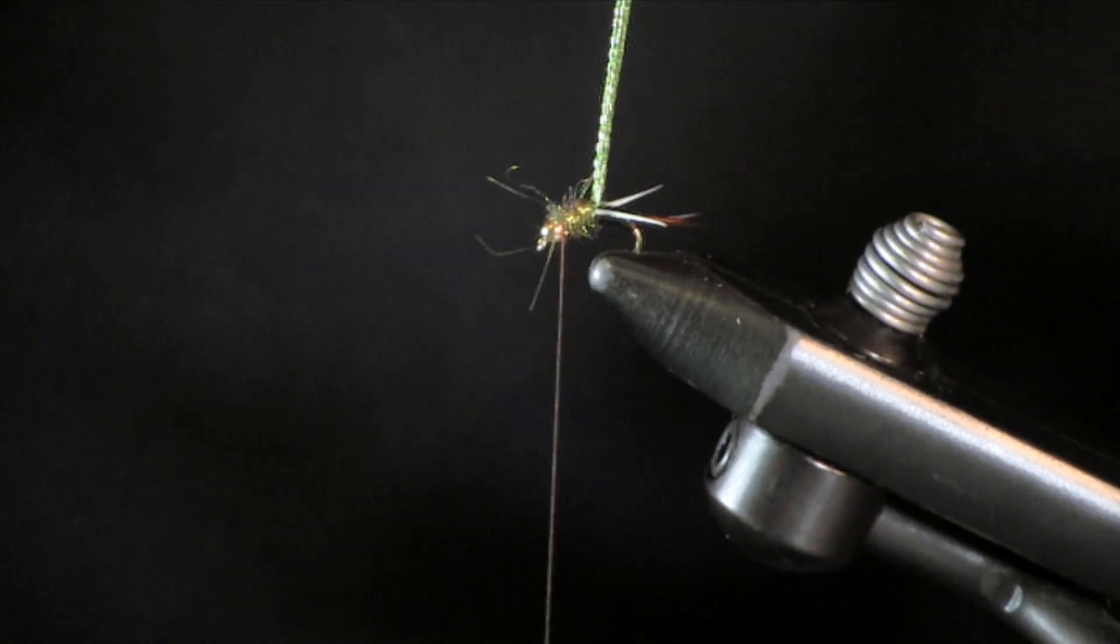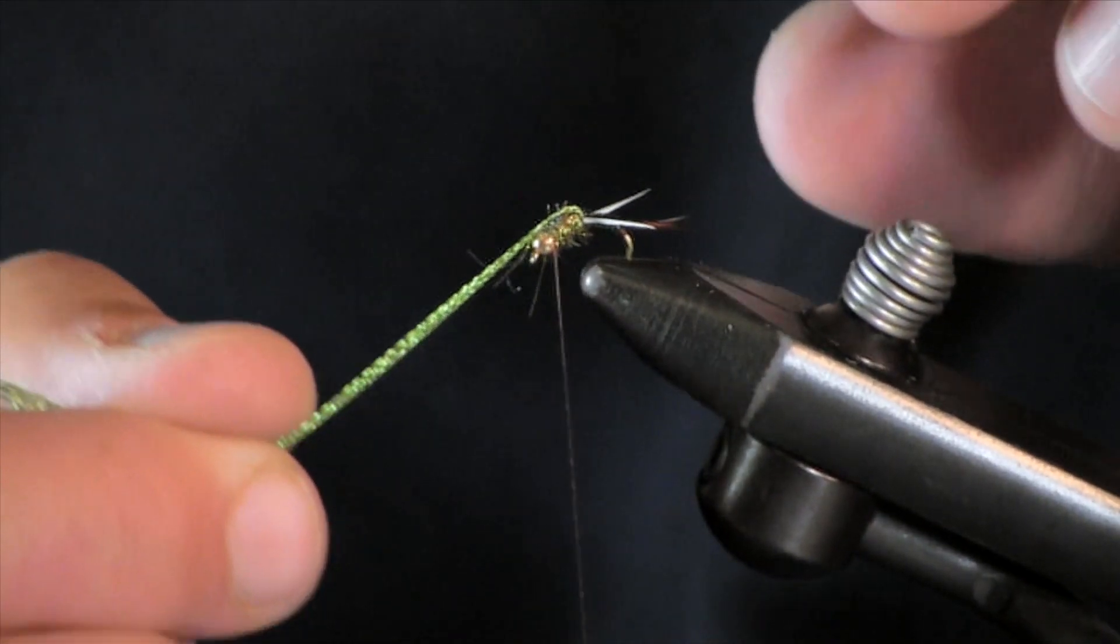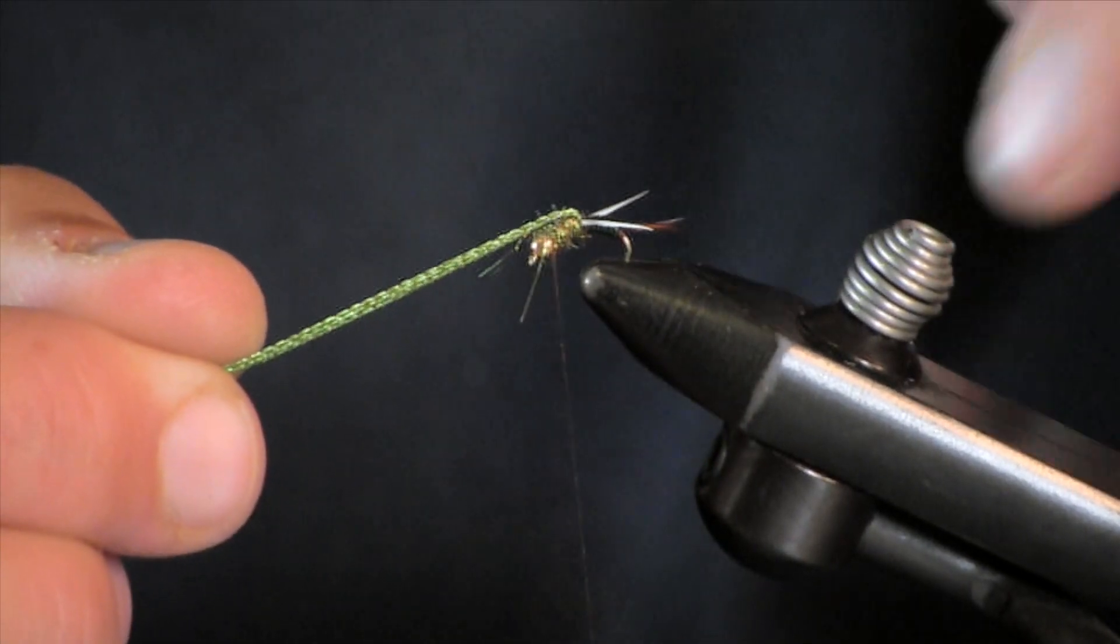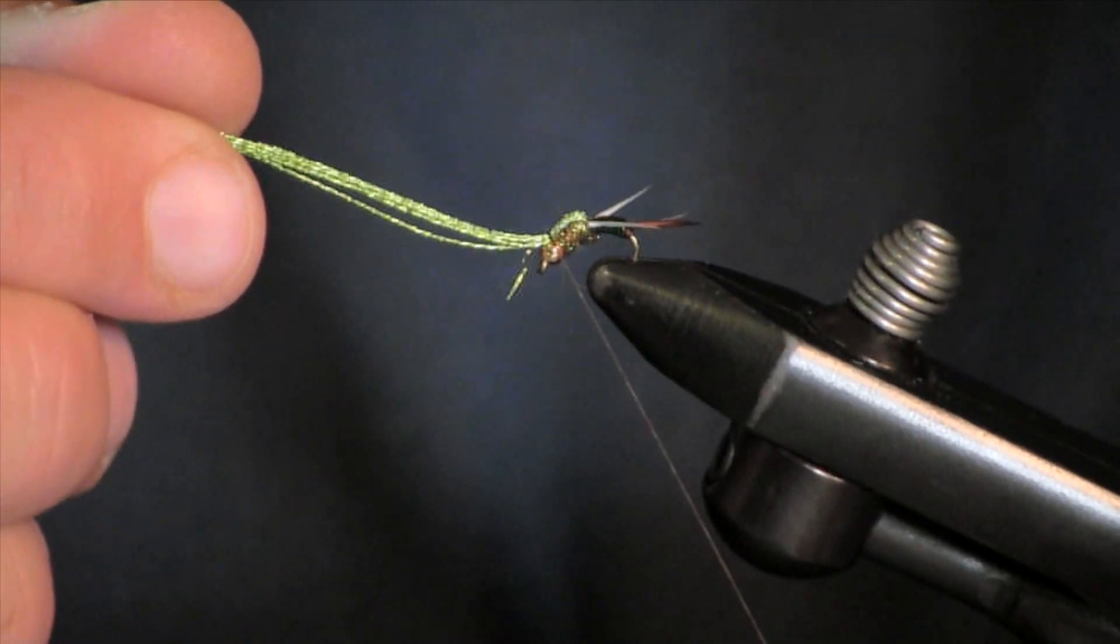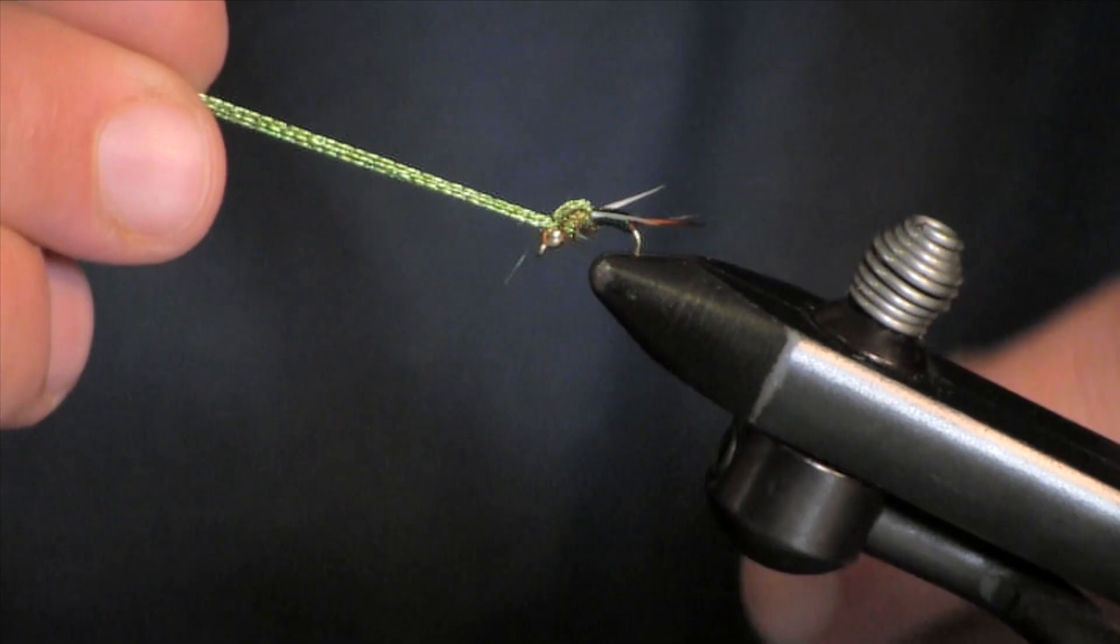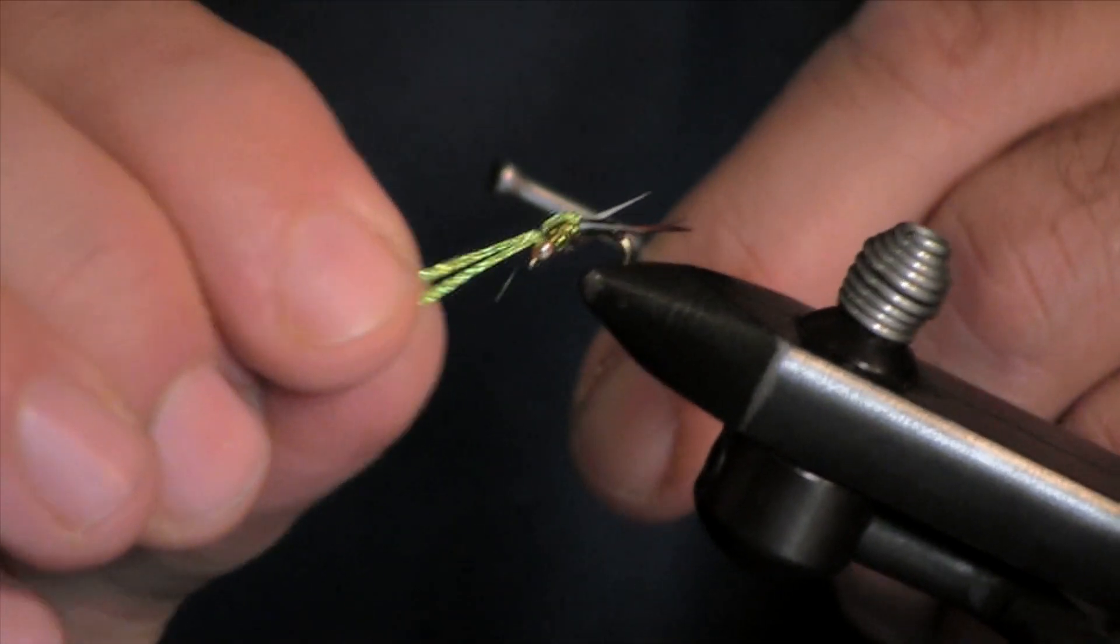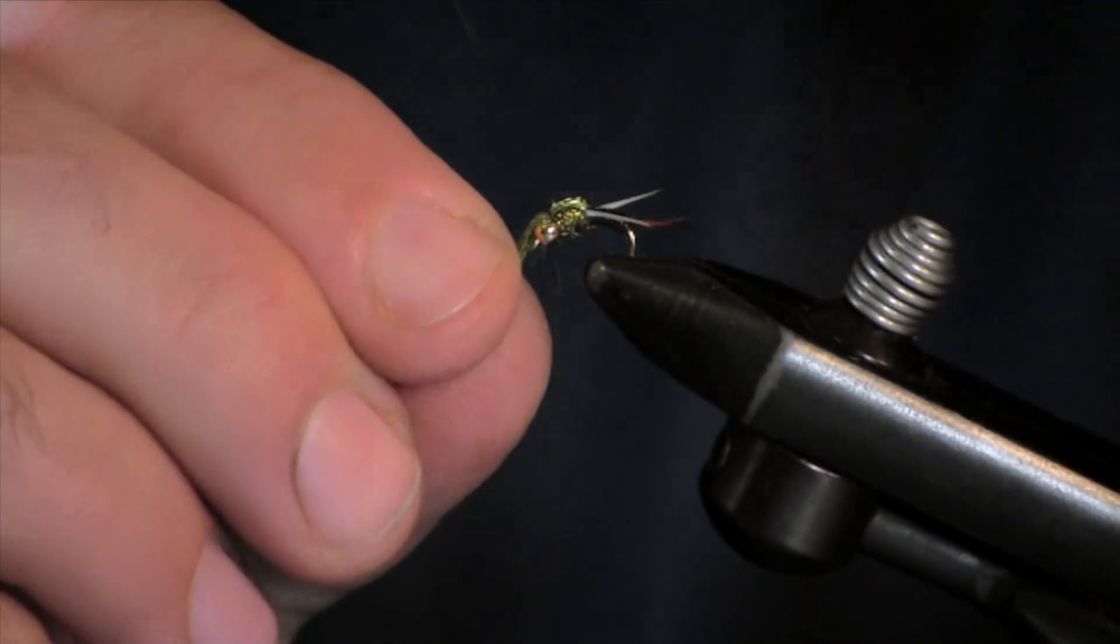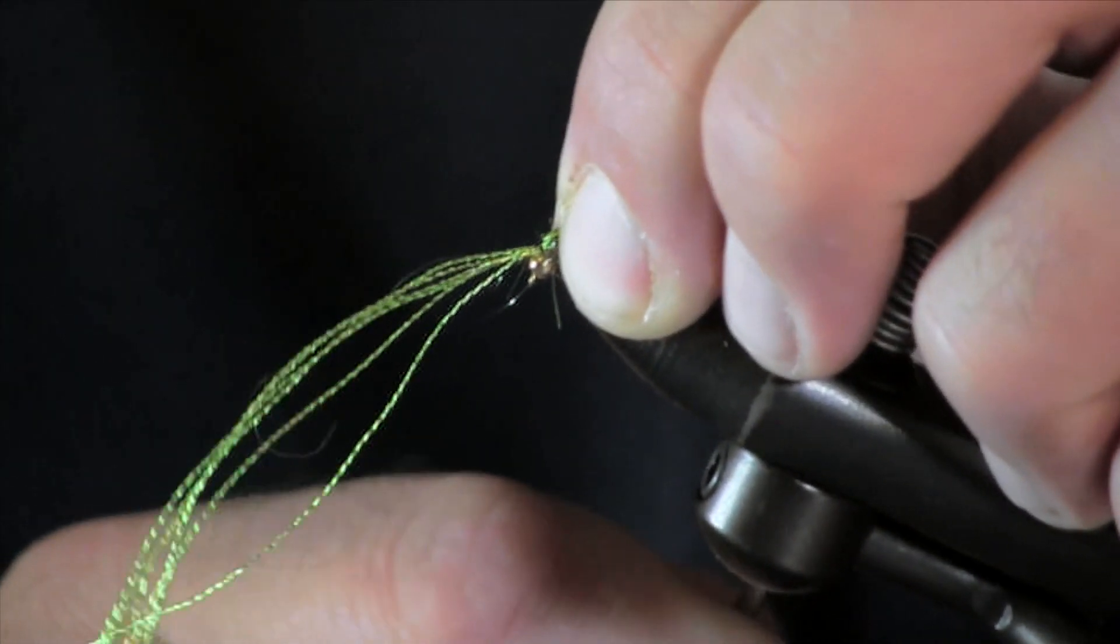Now we are going to take our embroidery thread. We are going to make the flashback part of this fly. You are just going to lay it right out over the bead. And then we are going to do a soft loop behind the bead to get this lined up where we want. You want it straight on, nice and straight on top there. Put another one and we are going to tie it down. Just make it a little bit tighter.